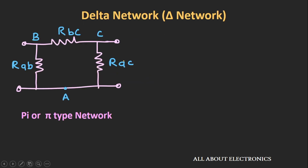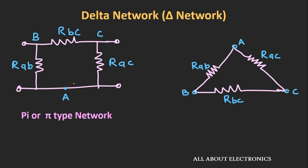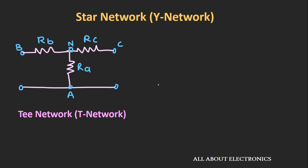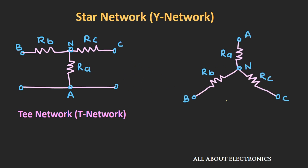Now suppose in any electrical circuit, if you see a pi network, then this pi network can be easily rearranged into the delta network. If we simply rearrange this pi network, it can be easily converted into the equivalent delta network, and we can apply all the conversion rules applicable for the delta network. Similarly, in any electrical circuit, if you see a T network, then this T network can be easily rearranged into the star network. All the conversion rules applicable for the star network are applicable for the T network as well.